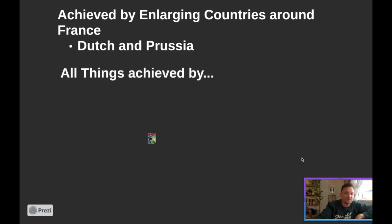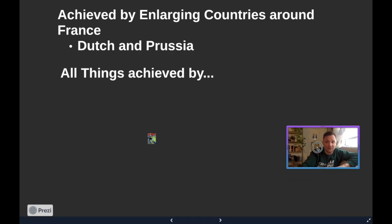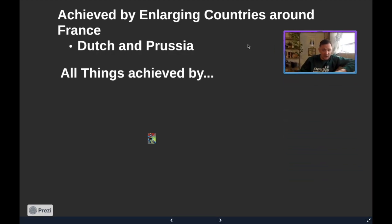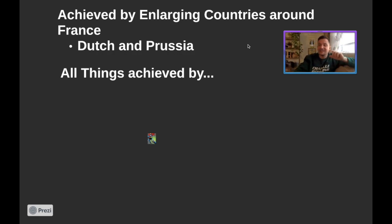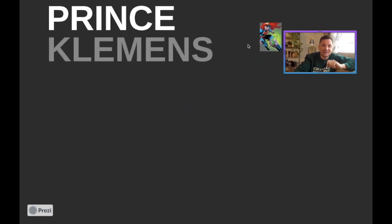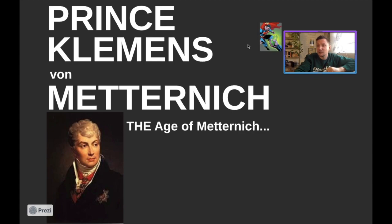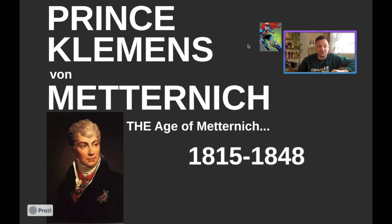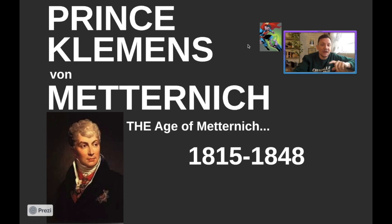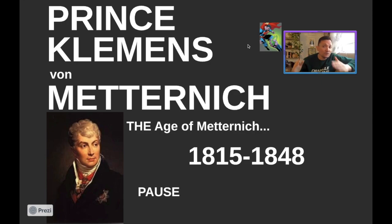All of these things were achieved with the help of one guy representing Austria at this meeting — Prince Clemens von Metternich. He is going to usher in a period known as the Age of Metternich from 1815 to 1848, which we'll talk about in the next unit, but keep him in the back of your mind. Metternich is going to represent Austria and work with Talleyrand to create this whole Concert of Europe concept. We're going to pause right there because we'll talk about one more thing in class, and we're going to have a whole day to review at the end of the week to get ready for your next test. I'll see y'all then.